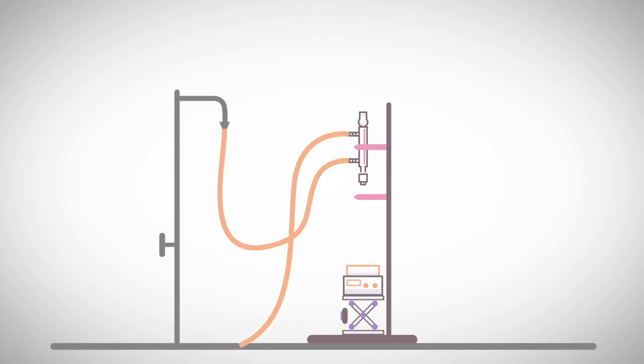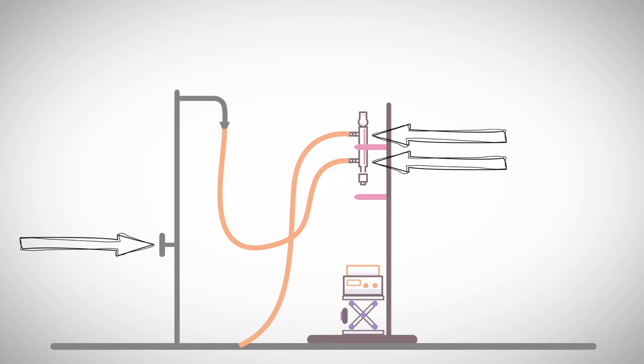Connect the yellow hoses to the condenser, in hose to the bottom and out hose to the top, and turn on the water.